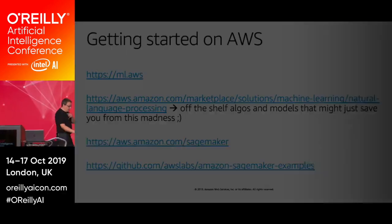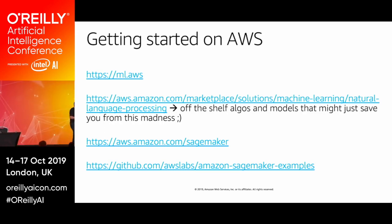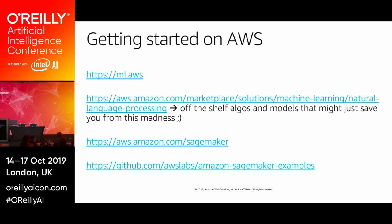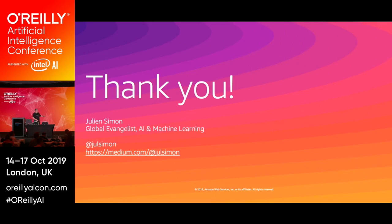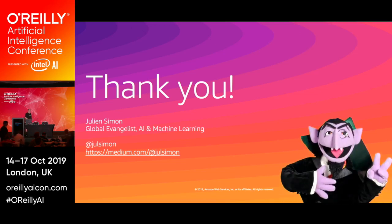If you want to get started at scale, you might need AWS. ml.aws is where you'll find all the good stuff on our services. We also have a collection of off-the-shelf algorithms and models including lots of NLP models — the Machine Learning Marketplace. You might just pick a model off the shelf, deploy it on AWS in two clicks, and live a happy life. If you're interested in SageMaker, the links are here. Thank you very much for listening — you can ping me on Twitter or connect on LinkedIn.